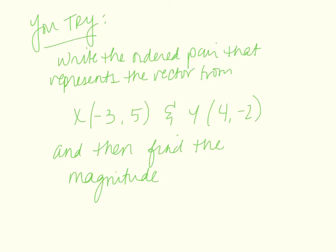Now I'd like you to try an example just like we did. Write the ordered pair that represents the vector from the two points x = (-3, 5) and y = (4, -2), and then find its magnitude.